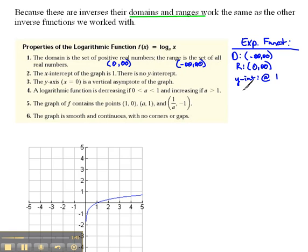For the exponentials, the x-axis was an asymptote. For the logarithmic functions, exactly opposite. The y-axis is an asymptote, in this case, a vertical asymptote.